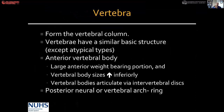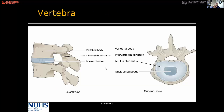Vertebrae all have a basic similar structure. They have the anterior vertebral body and then a posterior neural arch, and the part of the anterior vertebral arch will make the vertebral arch ring. Majority of the weight transmission takes place through the anterior part of the vertebral body and the disc component. This is more like a biomechanical or anatomical picture — vertebral body, disc, vertebral body posterior elements.